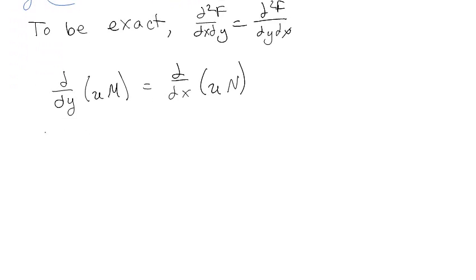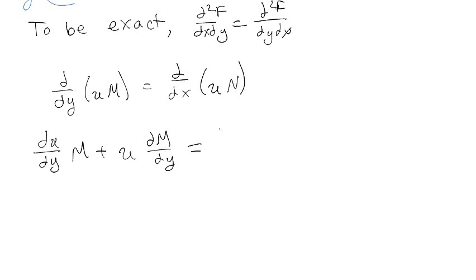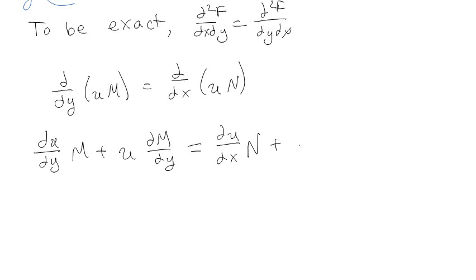Expanding by the product rule, we get: ∂u/∂y · M + u · ∂M/∂y has to equal ∂u/∂x · N + u · ∂N/∂x. Note these are partial derivatives.